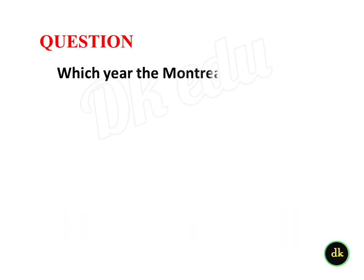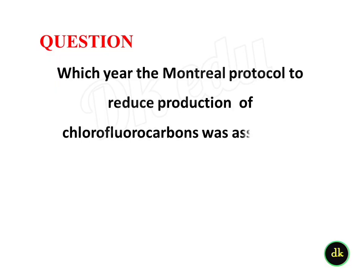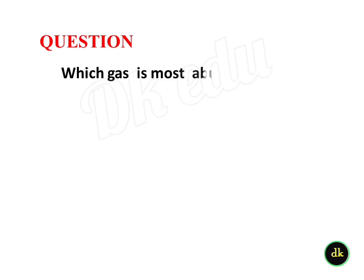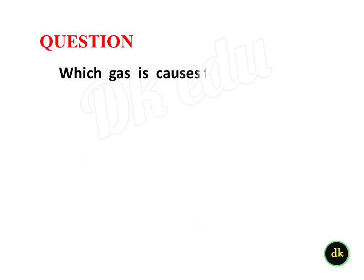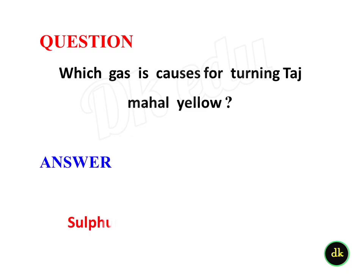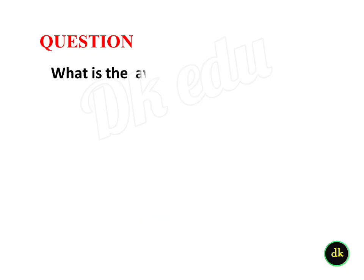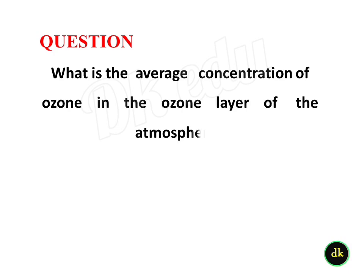Which year was the Montreal Protocol to reduce production of chlorofluorocarbons signed? 1987. Which gas is most abundant in the atmosphere? Nitrogen. What is the average concentration of ozone in the ozone layer? Less than 10 ppm.